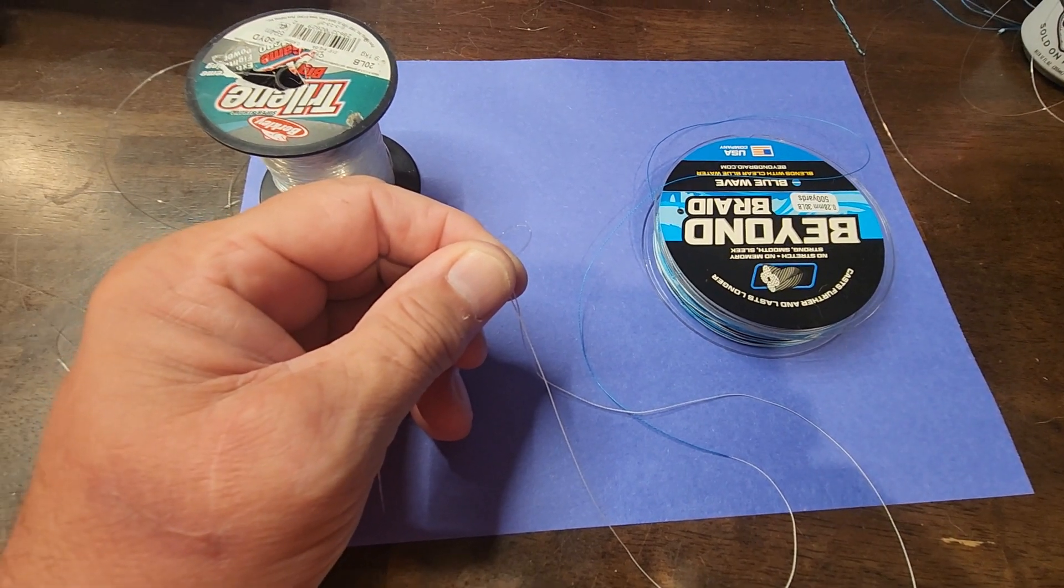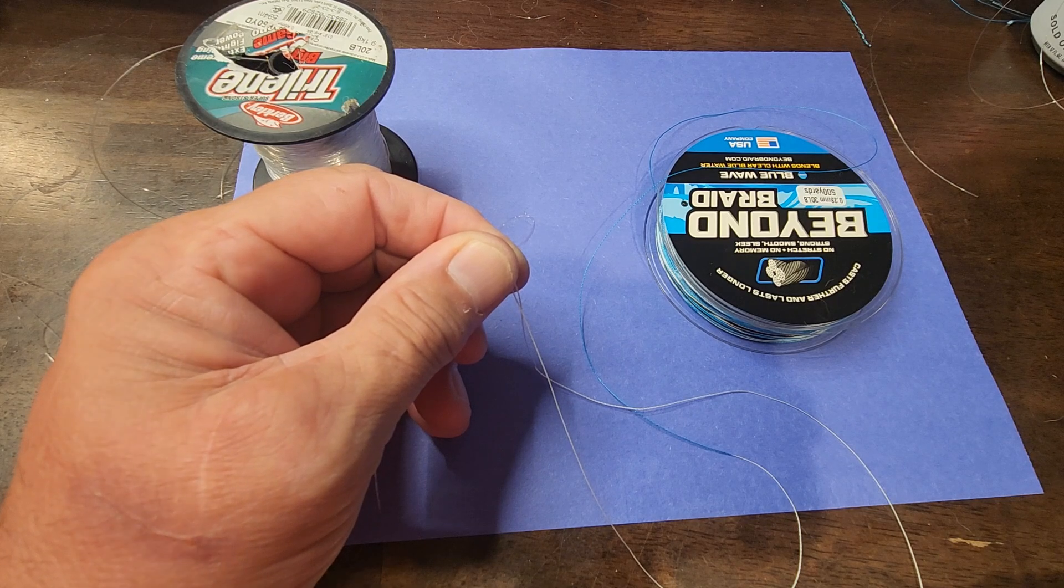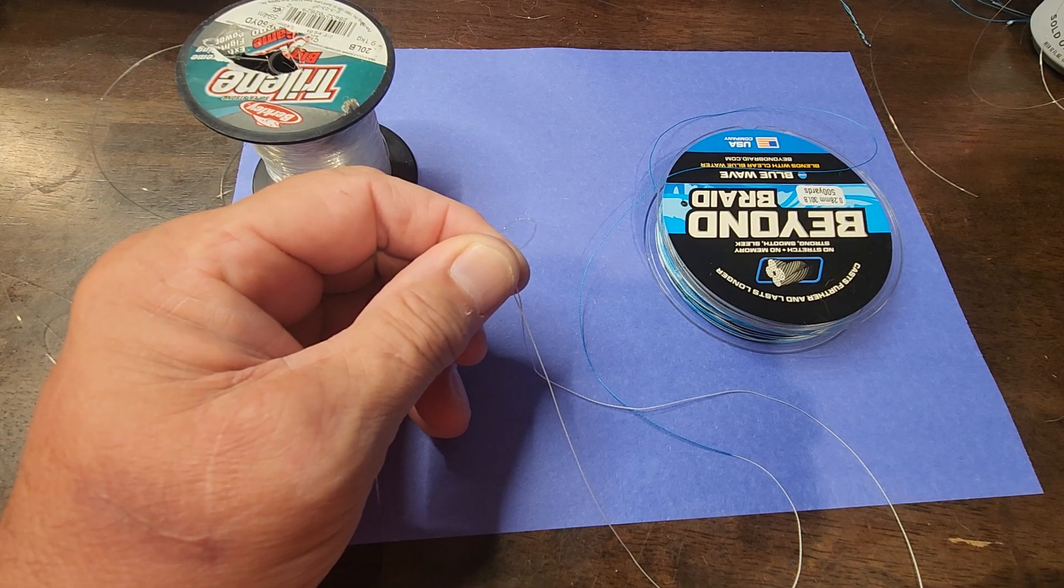Okay, this video here I'm going to show you my version of the Modified Alberto knot for tying a braided line to a monofilament line.